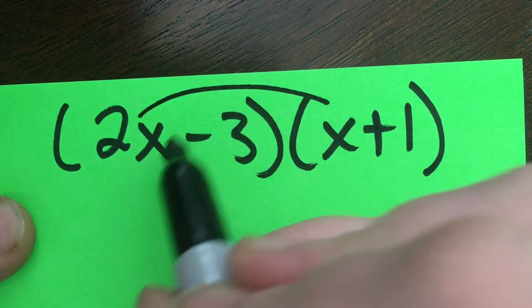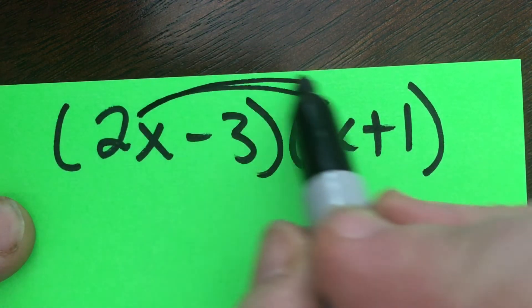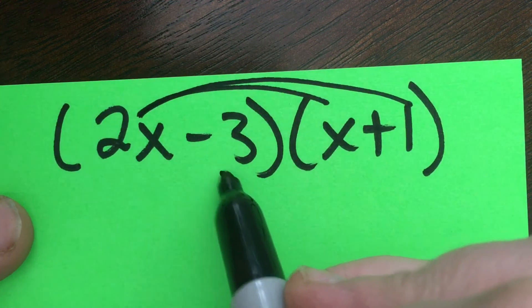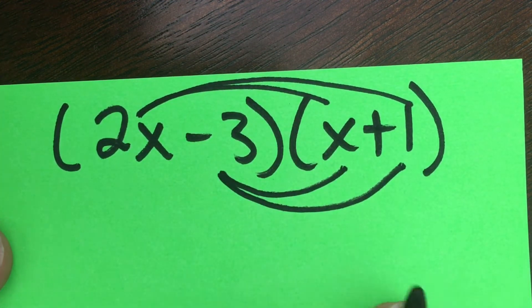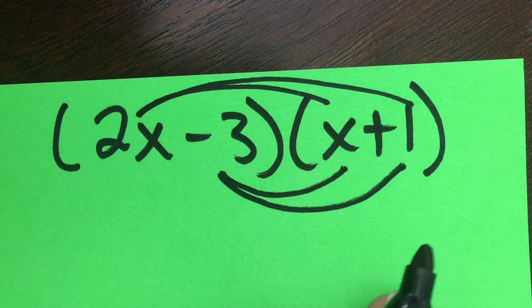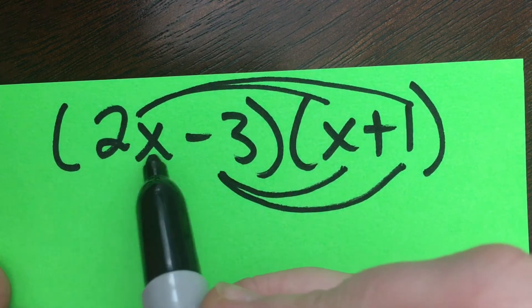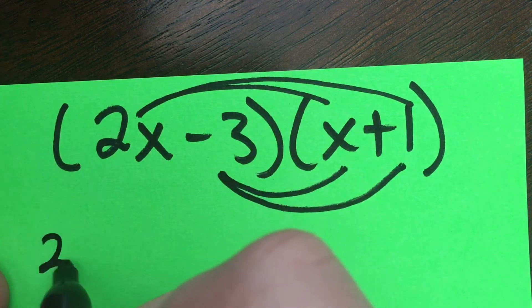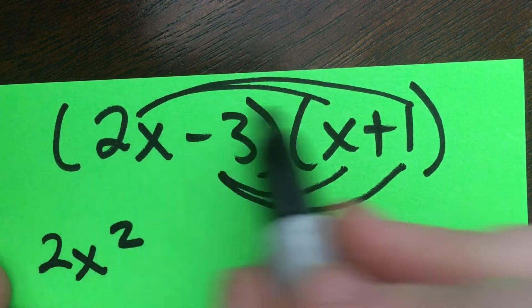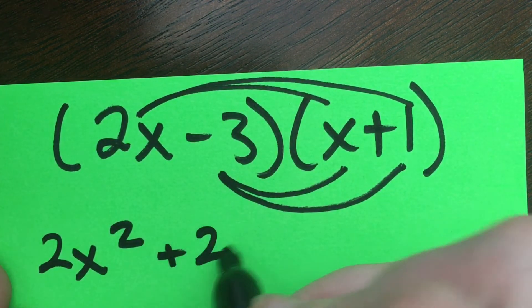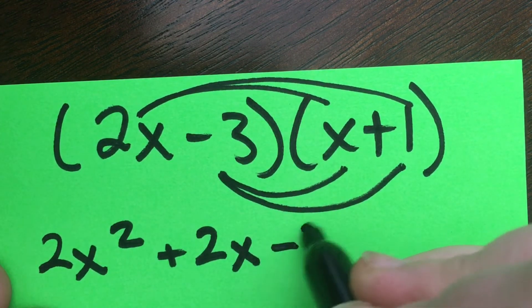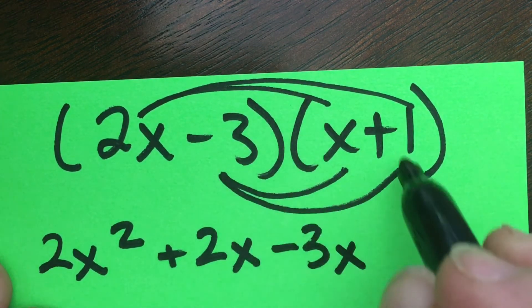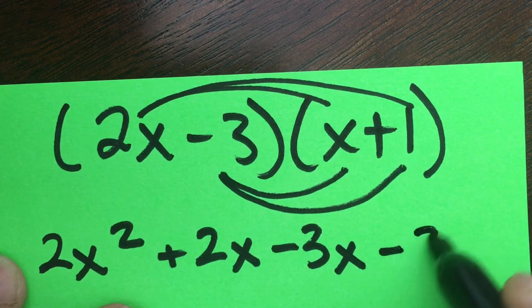Our process is the same, but now it's 2x times x and 2x times 1, and then negative 3 times x and negative 3 times 1. We're just trying to track more elements of each term. That's all that's different. So 2x times x is 2x squared. 2x times 1 is a positive 2x. Negative 3 times x is a negative 3x, and negative 3 times positive 1 is a negative 3.